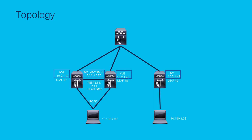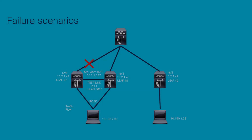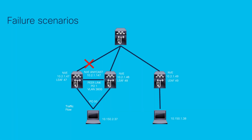In the first scenario where InfraVLANs is needed, the link from leaf 47 towards the spine goes down. In this scenario, the traffic from host 10.150.2.37 is hashing to leaf 47. And since the uplink is down, leaf 47 will forward the traffic encapsulated in a VXLAN header through the peer link to reach the destination towards the spine.